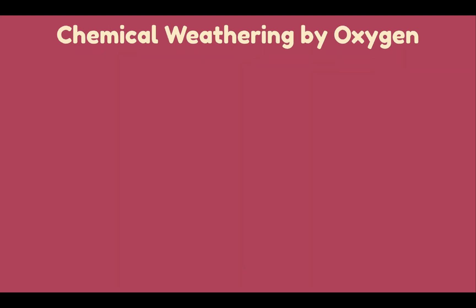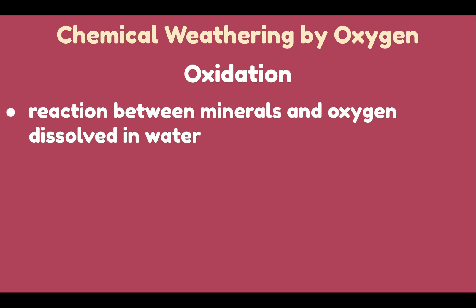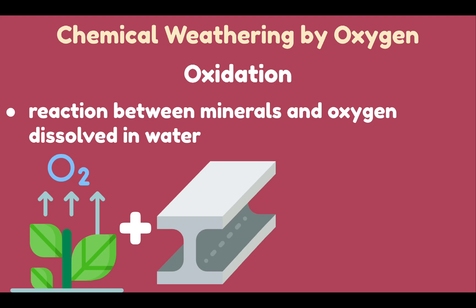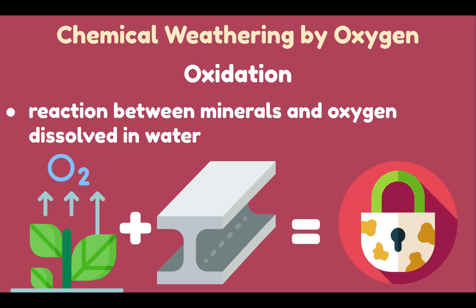Chemical weathering by oxygen is also called oxidation — a reaction between minerals and oxygen dissolved in water. Oxidation is a chemical reaction that takes place when oxygen reacts with another element, for example iron, because oxygen is very chemically reactive. Oxygen plus iron creates rust. Minerals that are rich in iron break down as the iron oxidizes and forms new compounds. Iron oxide produces the red color in soils.